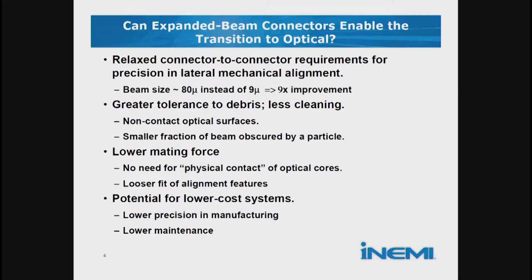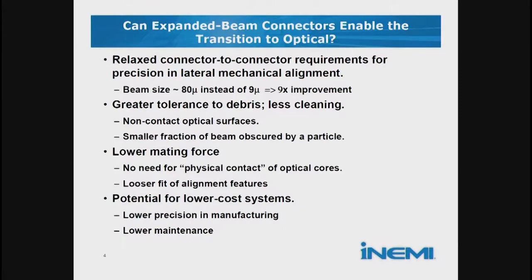With expanded beam connectors, we can get relaxed alignment tolerances at least laterally. Because of that large beam, if a particle of dirt obscures the beam, there's much less effect on intensity, so it's more resistant to dirt. You can have lower mating force because you don't need physical contact. In conventional single mode connectors, fibers are polished so they're domed and pushed together hard enough to make optical contact — the more fibers you're connecting, the more force you need. Going to a non-contact expanded beam connector can make that much easier, and by relaxing tolerances and forces, we can come up with lower cost systems.